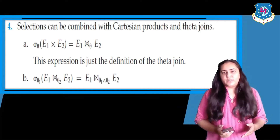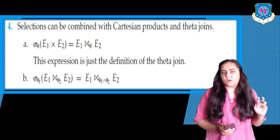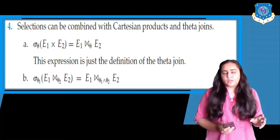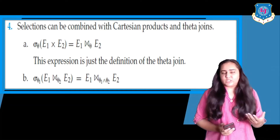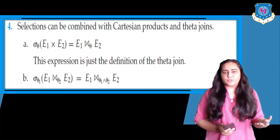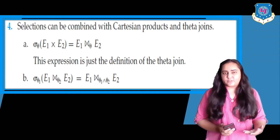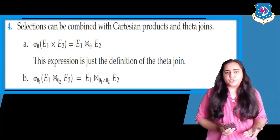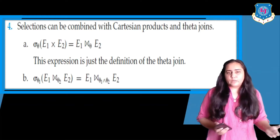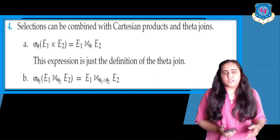A natural join performs a simple equal-to operation between the common columns of E1 and E2. But a theta join can do much more than just equal-to; a theta join can handle greater than, less than, greater than or equal to, or less than or equal to conditions. You use the natural join symbol along with a theta condition to perform something other than equal-to, and that is what a theta join is.